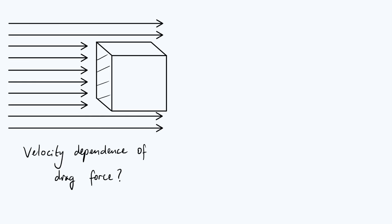Now I think it's easiest to understand this system from the perspective of the rest frame of the cube. In other words, we're going to imagine that the cube is stationary and the fluid is flowing to the right with some velocity — let's say that the velocity is u. But note that this is completely physically equivalent to the cube moving to the left with a constant velocity of u in a stationary fluid.